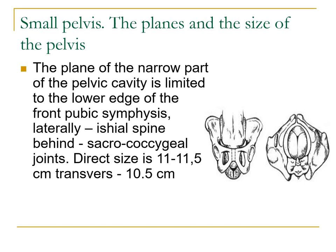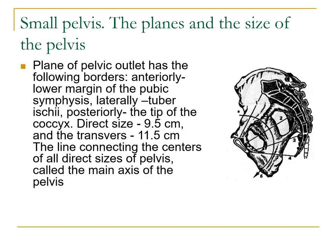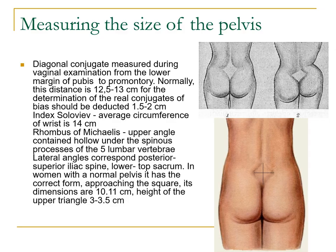The narrow part of the pelvic cavity is limited anteriorly by the lower edge of the pubic symphysis, laterally by the ischial spines, and behind by the sacrococcygeal joints. The direct size is 11 to 11.5 centimeters and the transverse is 10.5 centimeters. The outlet is bounded anteriorly by the lower margin of the pubic symphysis, laterally by the bituberous diameter, and posteriorly by the tip of the coccyx. The diagonal conjugate is measured during vaginal examination from the lower margin of the pubic to the promontory, and normally this distance is 12.5 to 13 centimeters.